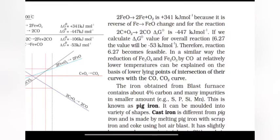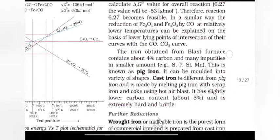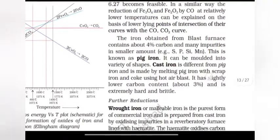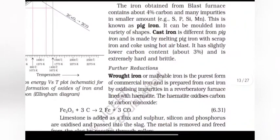In a similar way, the reduction of Fe3O4 and Fe2O3 by CO at relatively lower temperatures can be explained on the basis of lower lying points of intersection of their curves with CO-CO2 curve. The iron obtained from blast furnace contains about 4% carbon and many impurities in smaller amounts. This is known as pig iron.